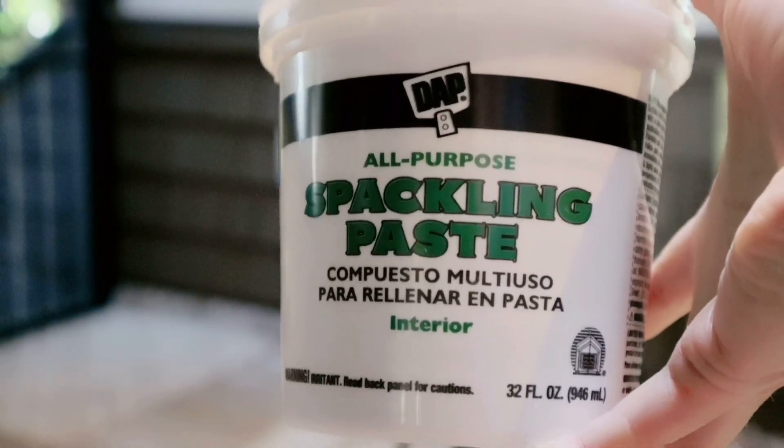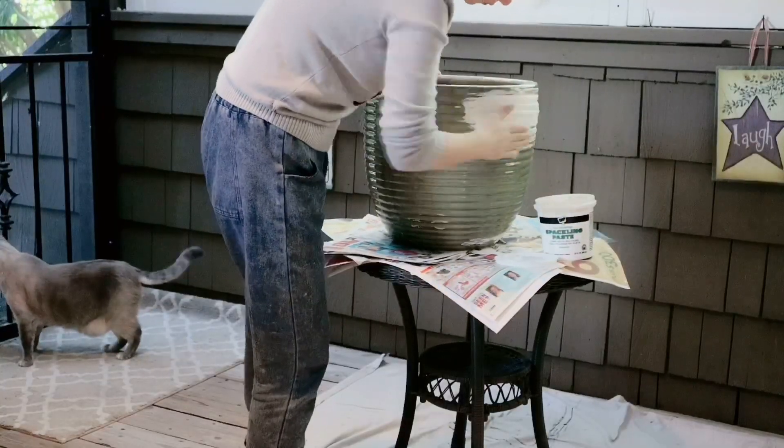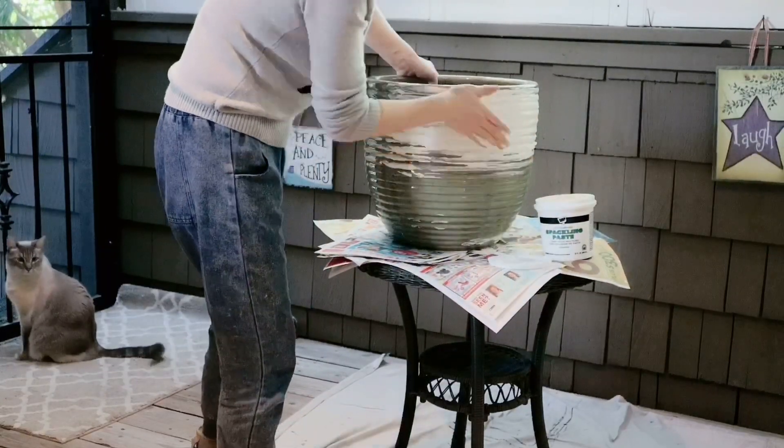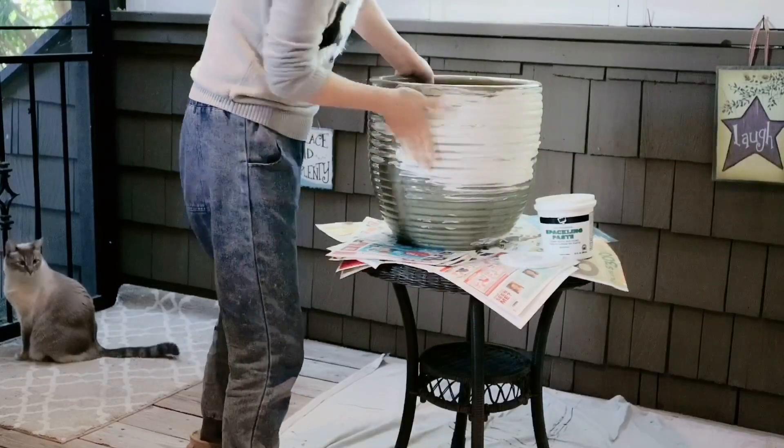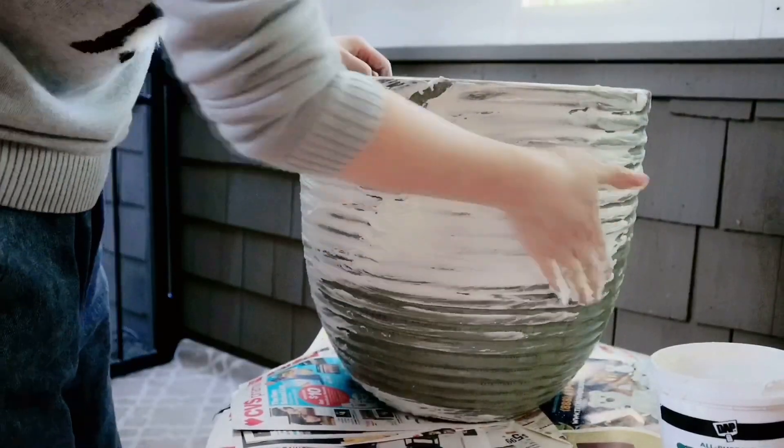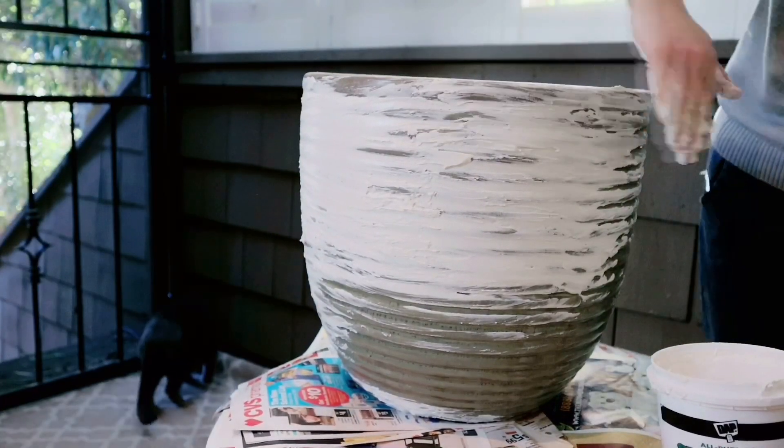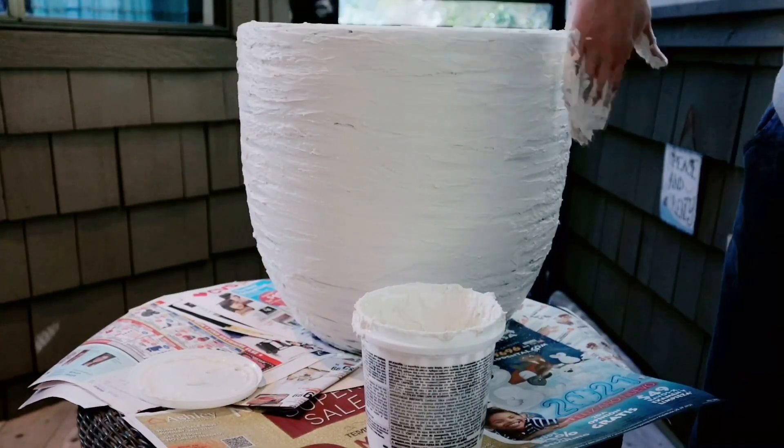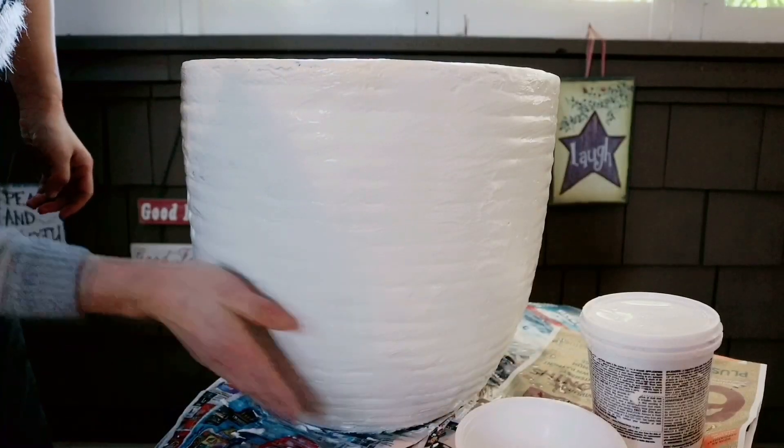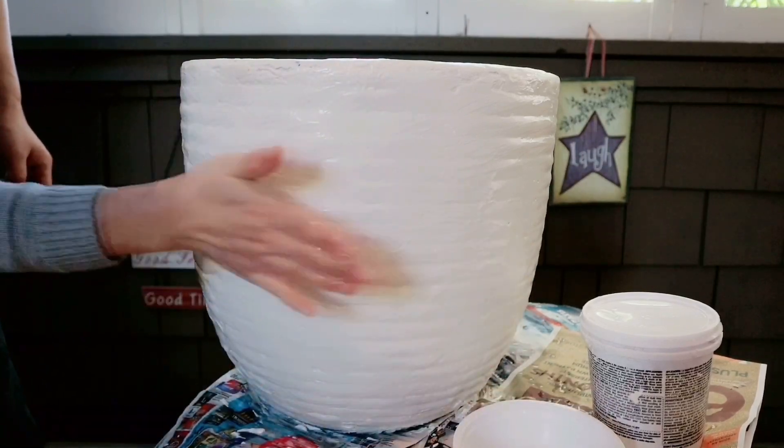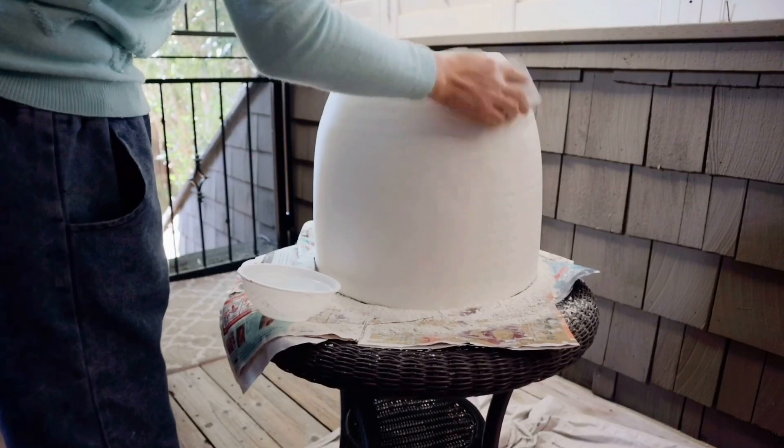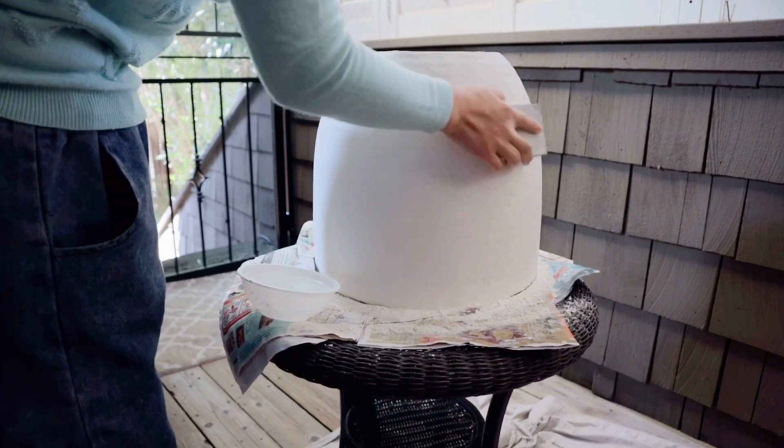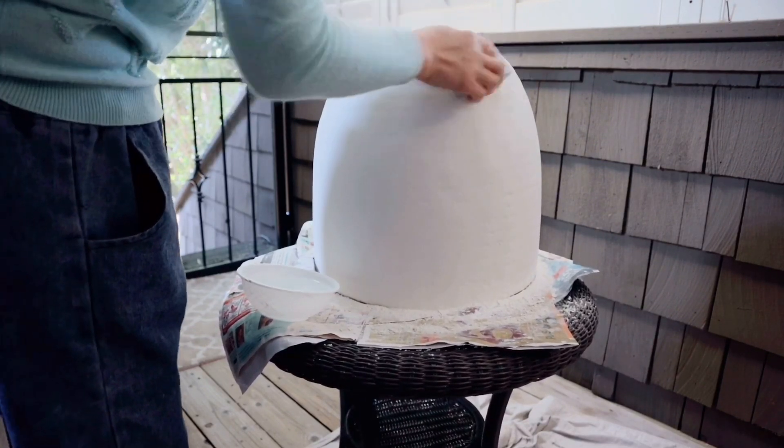After glue is cured, I wrapped this all-purpose spackling paste on the pot until it's fully covered. When the paste gets a little harder and almost dry, I started using my bare hand to dip in some water and rub the surface to help getting it smoother. And after it's completely dried, use a 220 grit sand sponge for a nice smooth finish.